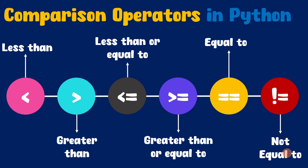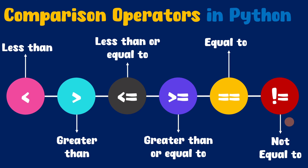Next we have the not equal to comparison operator. Not equal to comparison operator will take two values. If the value present on the left hand side is not equal to the value present on the right hand side, it will return true. If the value present on the left hand side is equal to the value present on the right hand side, it will return false. So not equal to comparison operator is completely opposite of the equal to comparison operator. In order to represent this not equal to comparison operator, we use the exclamation sign and equal to sign.